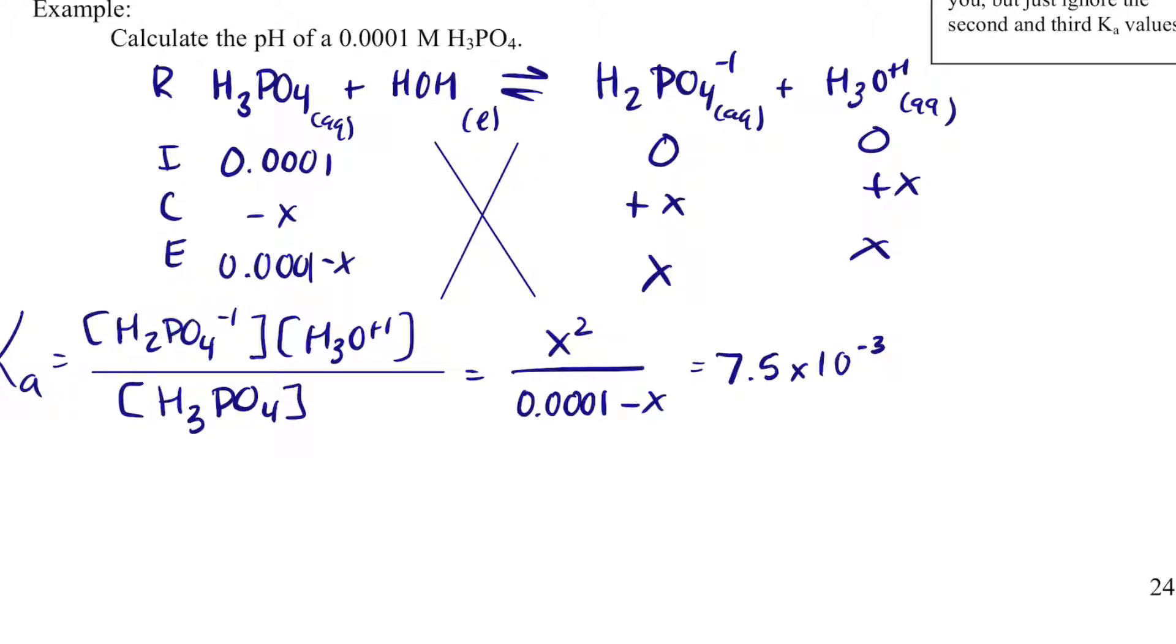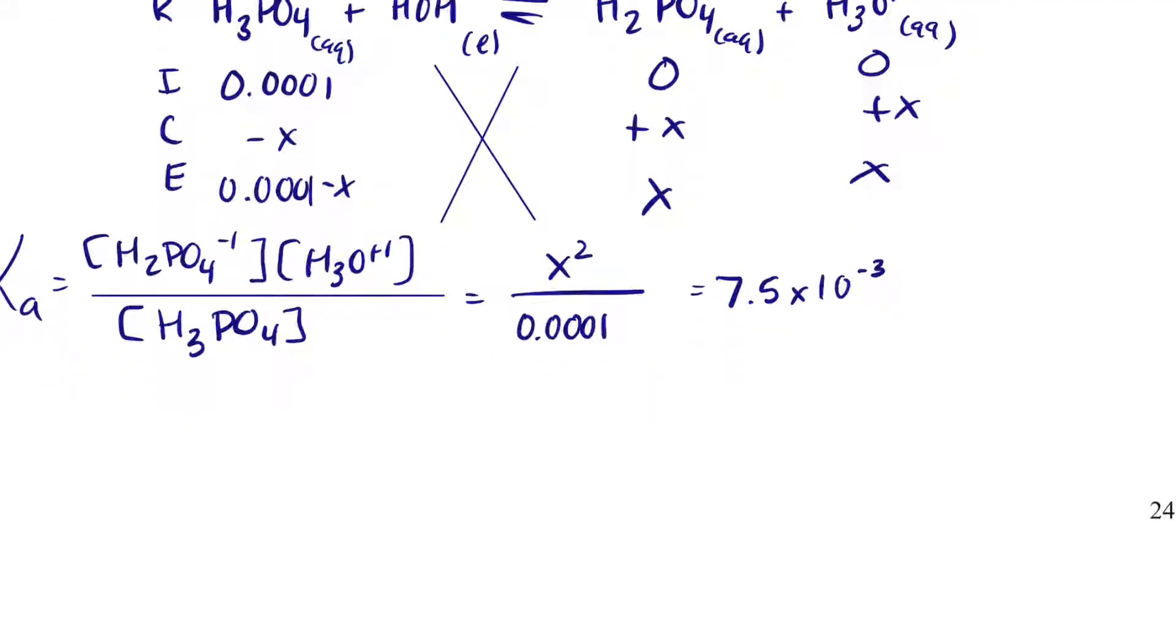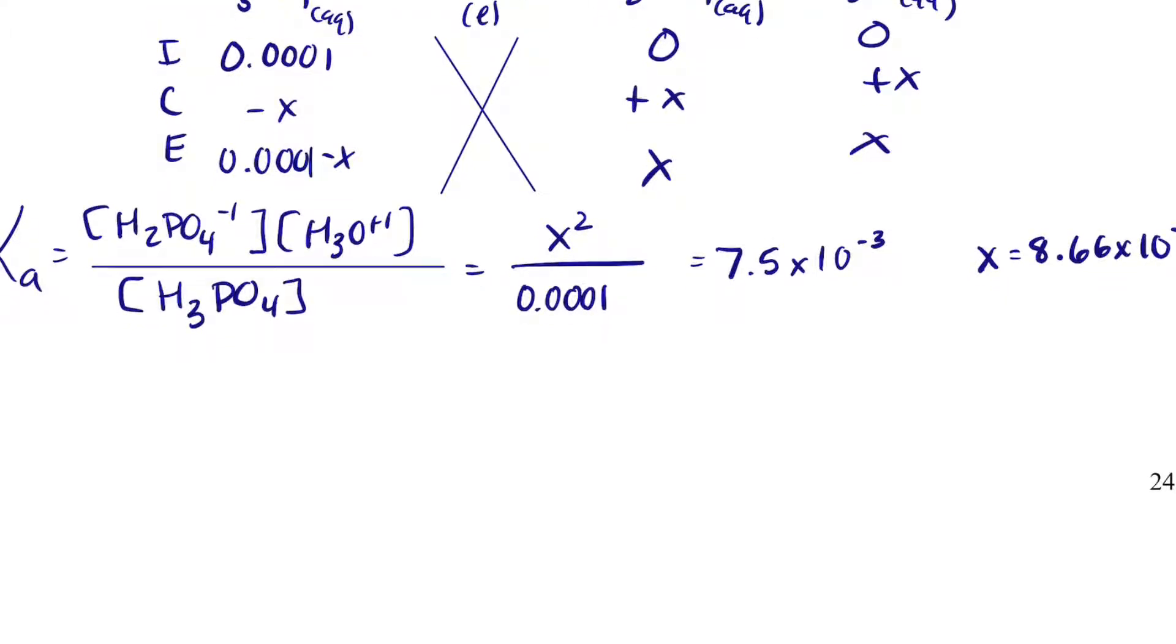We can simplify this a little bit, get rid of minus x. And when I solve for x, x is 8.66 times 10 to the minus 4. Okay? And I can plug that in and get the pH.